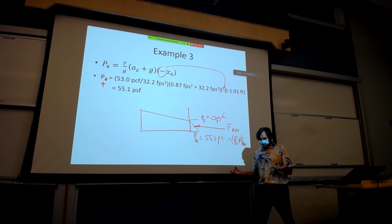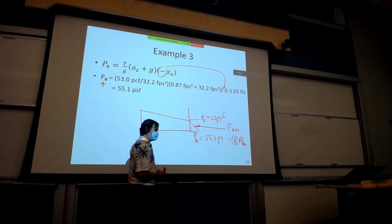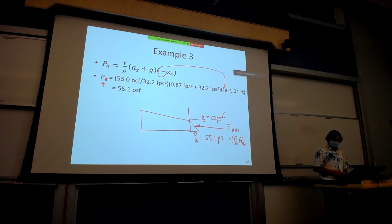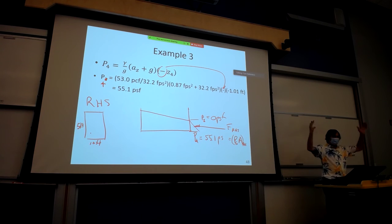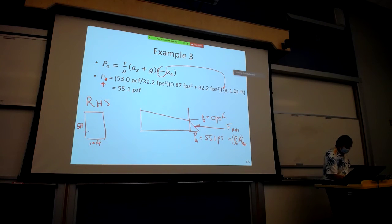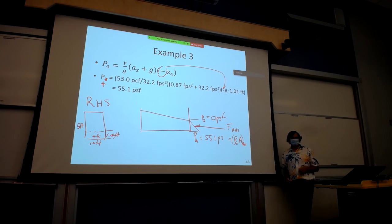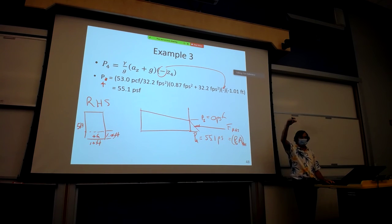We take the linear pressure distribution and calculate the pressure at the center of area, then multiply by the submerged area to get the force. For the right-hand side: average pressure = (0 + 55.1)/2 = 27.55 PSF, submerged area = 1.01 ft × 10 ft. Force on the right side = 278 lb. Force on the left side = (0 + 217)/2 × 3.99 × 10 = 4,330 lb.